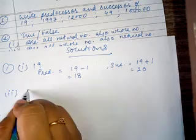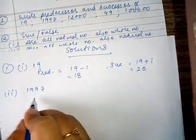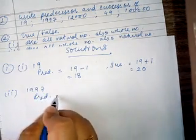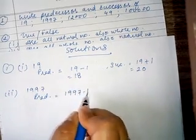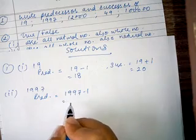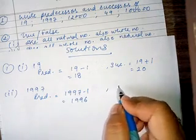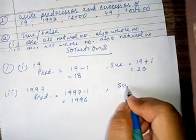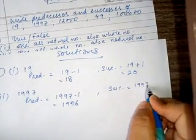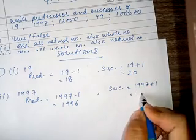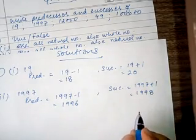The second number is 1997. We have to find out predecessor and successor. Predecessor will be equal to 1997 minus 1, so the answer is 1996. And for the successor, we add 1 to this number, we get 1998. This is the successor.